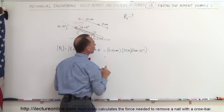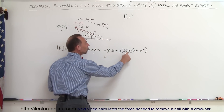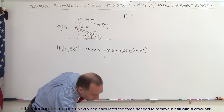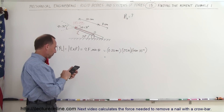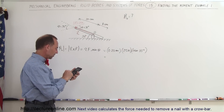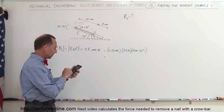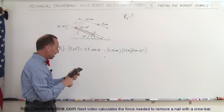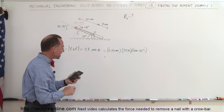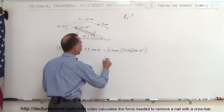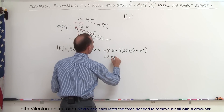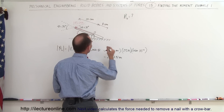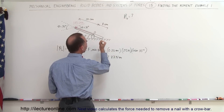The units are newtons times meters, or Newton-meters — that's the unit of moment. So we have 0.2 times 25 times sine of 35 degrees, which gives us 2.87 Newton-meters, and the direction is out of the board.